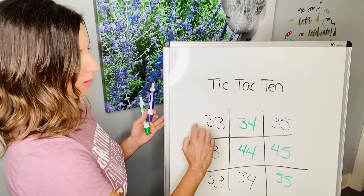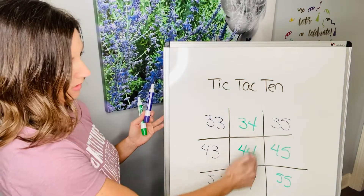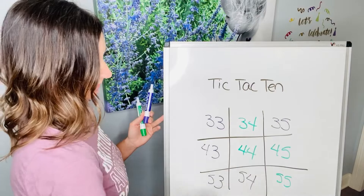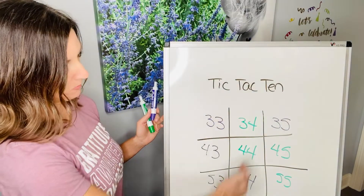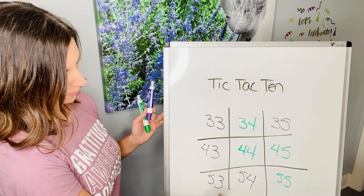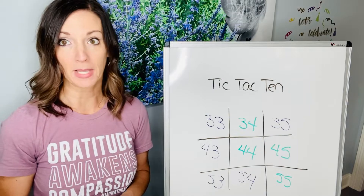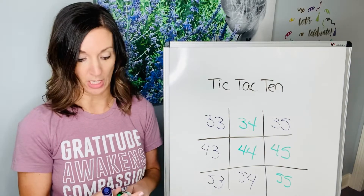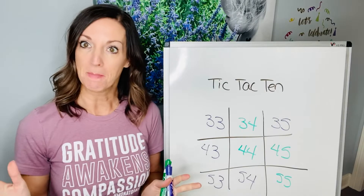If you notice, it doesn't matter where you start, but you're going to go in order — one more, another one more, then 10 more, then another one more. So these are all 30s, 40s, 50s for this round. And they notice the ones number is always the same in each row — threes, fours, fives. So if that makes sense, that's a fun game to play for place value and challenge each other at the house, instead of just X's, making it into math.